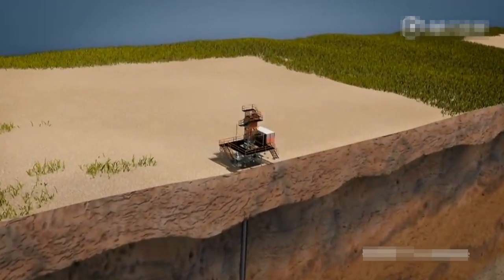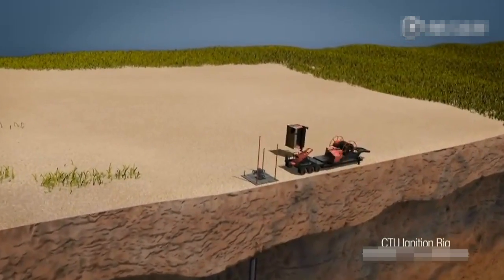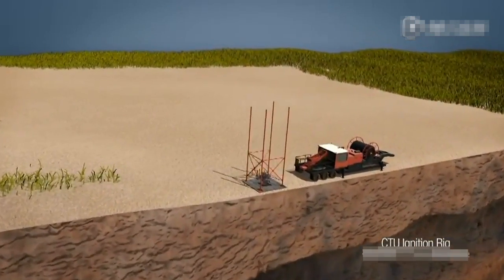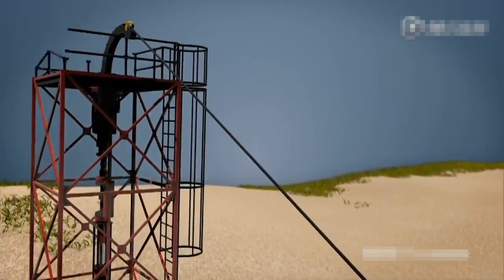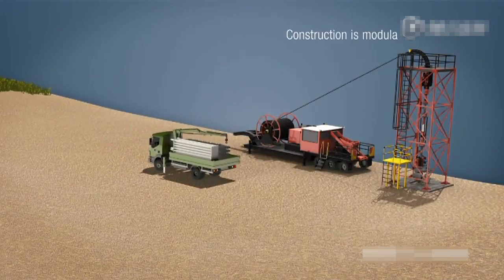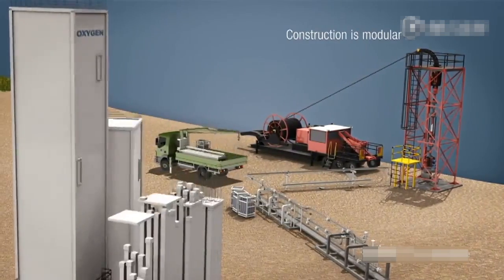A coiled tubing unit is rigged up over the injection well in preparation for start-up of the gasifier. The injection well is connected to surface facilities and the oxidant supply equipment. The UCG surface facilities are of modular design.